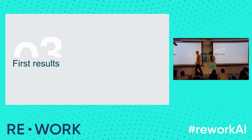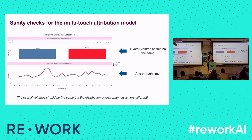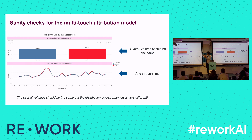Before looking at results, we can do some sanity checks. We now have two model outputs: one from the multi-touch attribution model and one from the last-click model. One check is the overall volume of conversions — changing the attribution model should not suddenly produce more conversions in one than the other. In June 2022 we have almost the same volume of the selected KPI, such as bookings, and through time the number of conversions should not be very different. These equalities hold globally, but the distribution across channels should differ — and that's what we want to examine.